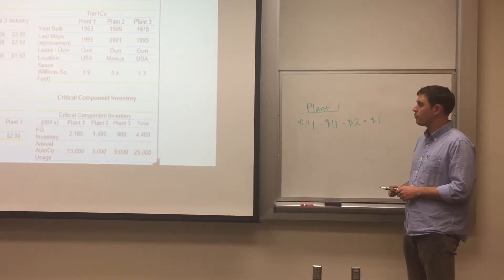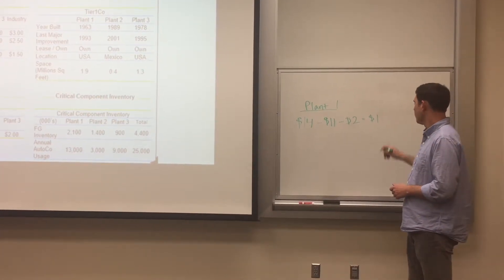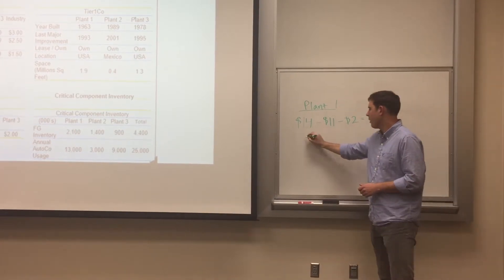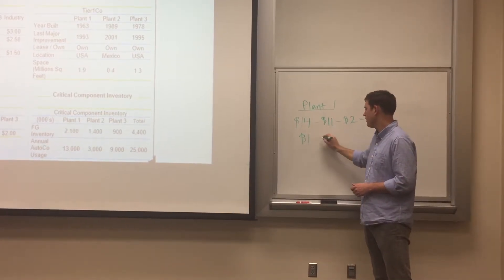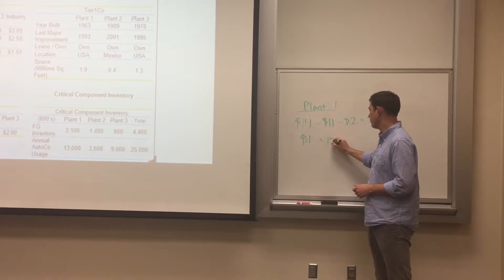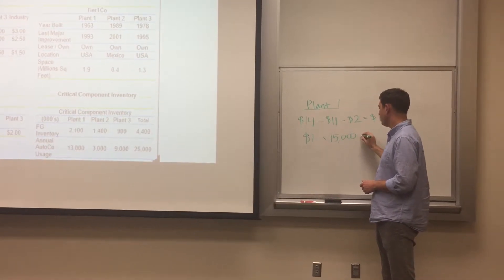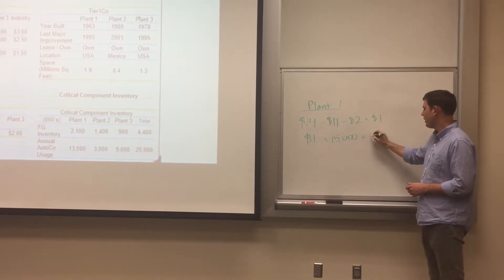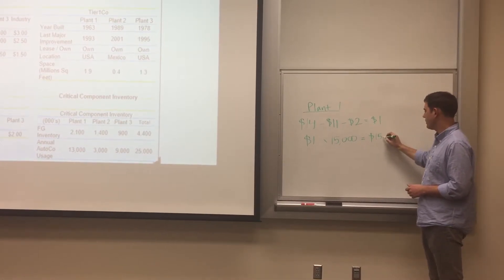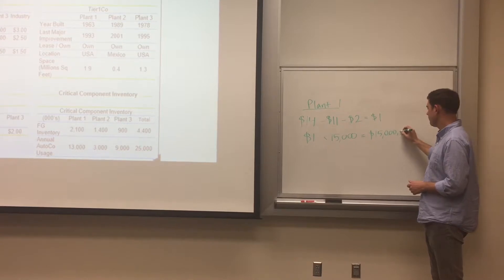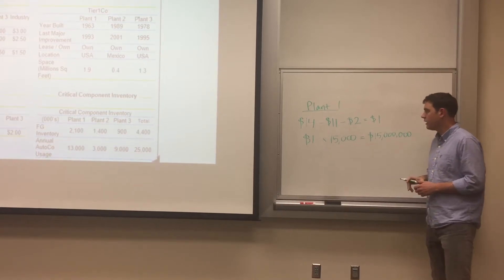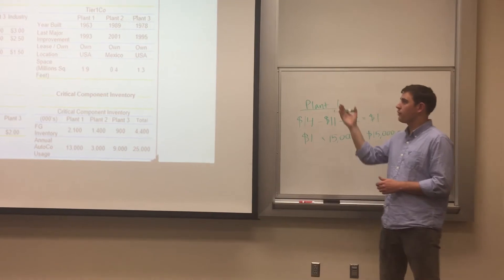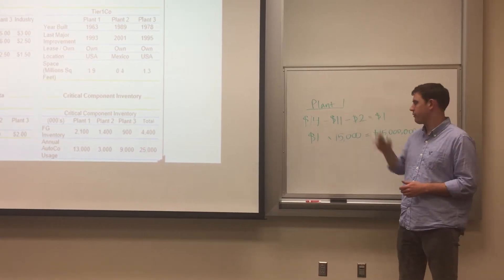That gives us a total profit margin of $1 per part. Now to find total profit in a given year, we just need to multiply the profit per part times the number of parts sold. And note that the number of parts sold is in thousands. And so the profit for plant one is not $15,000, but $15 million.